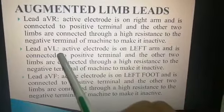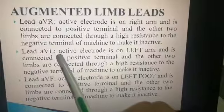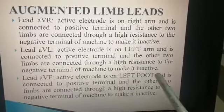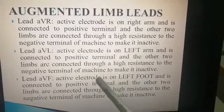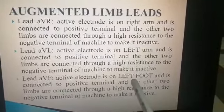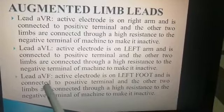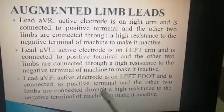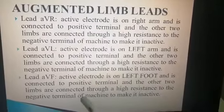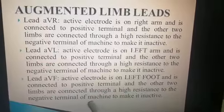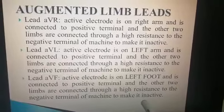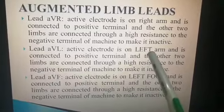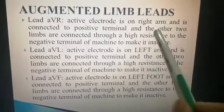In AVL, 'L' means left arm, so the active electrode is on the left arm connected to the positive terminal. The other two limbs — right arm and left foot — are connected to the negative terminal. In AVF, the active electrode is on the left foot connected to the positive terminal, and the other two limbs — left arm and right arm — are connected through high resistance to the negative terminal.